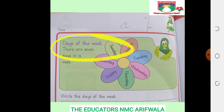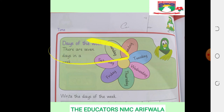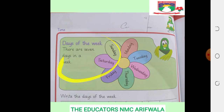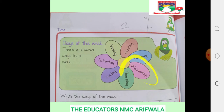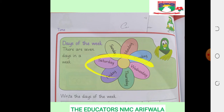Aaj hamarah topic hai days of week. There are 7 days in a week — ek hafde mein 7 din hotte hai. The first one is Monday, Tuesday, Wednesday, Thursday, Friday, and Saturday.